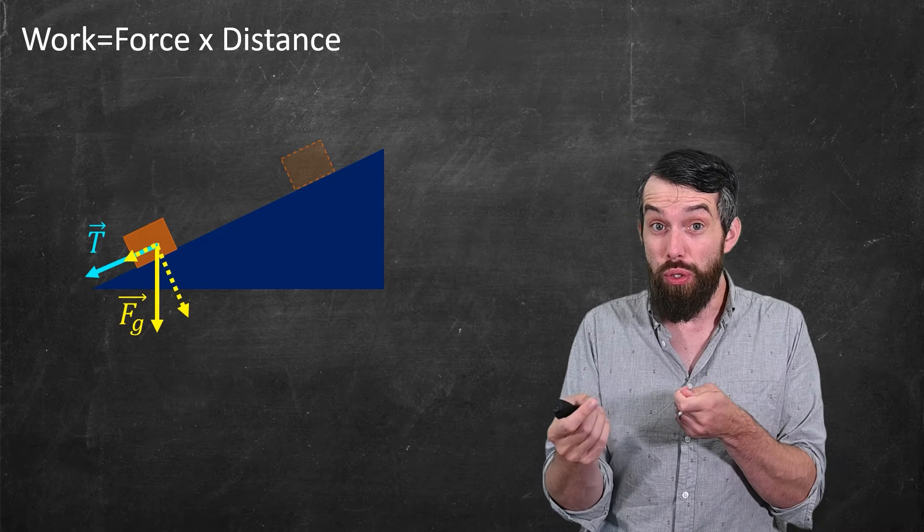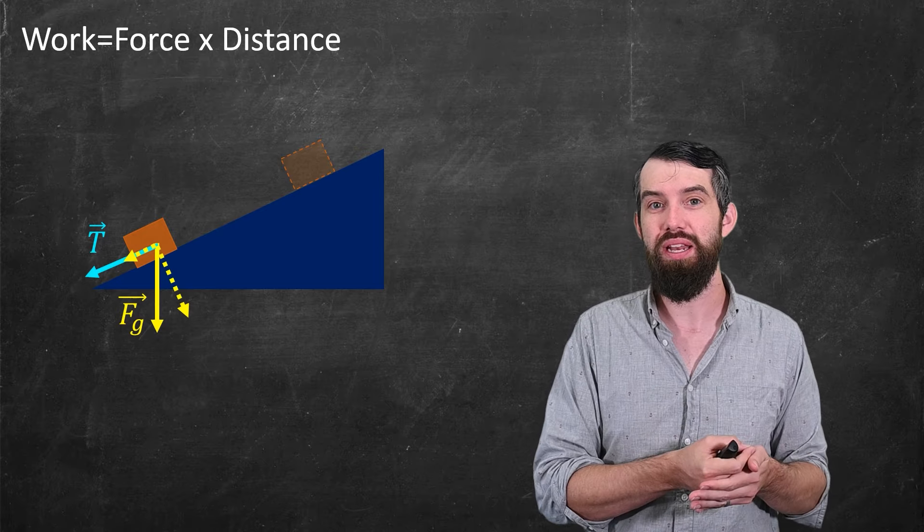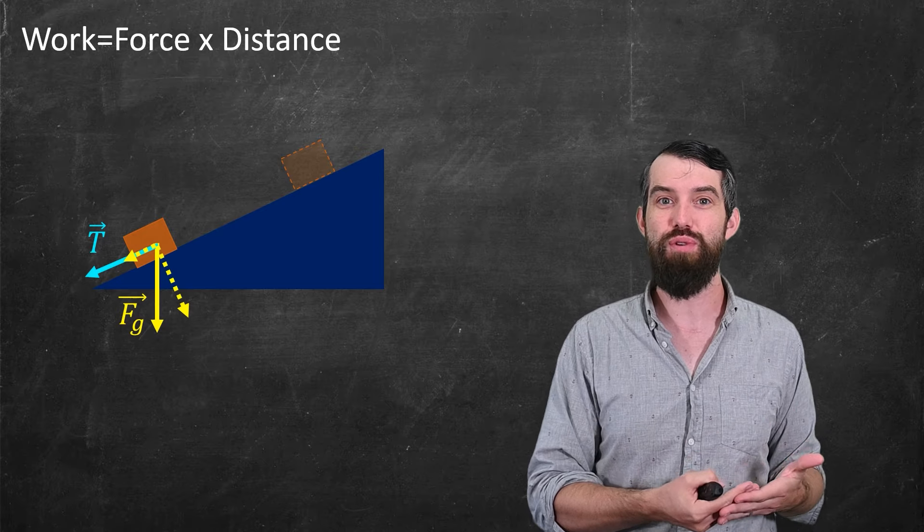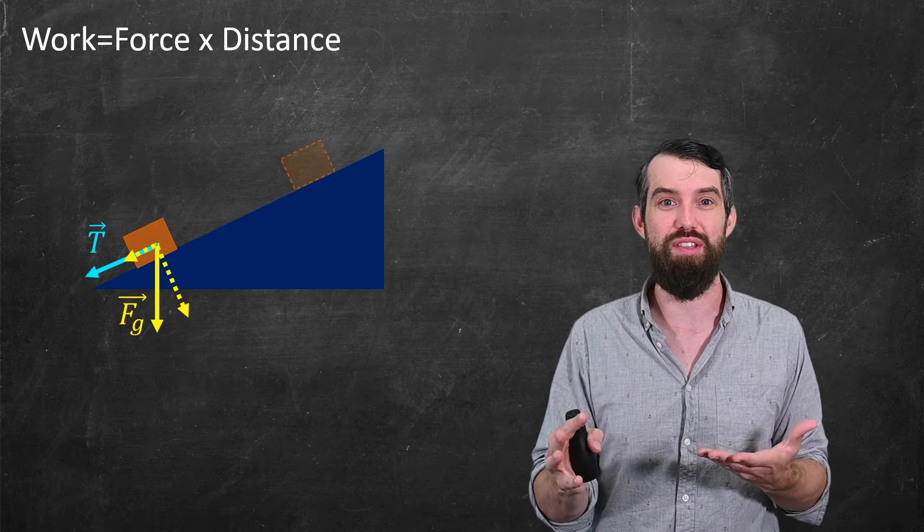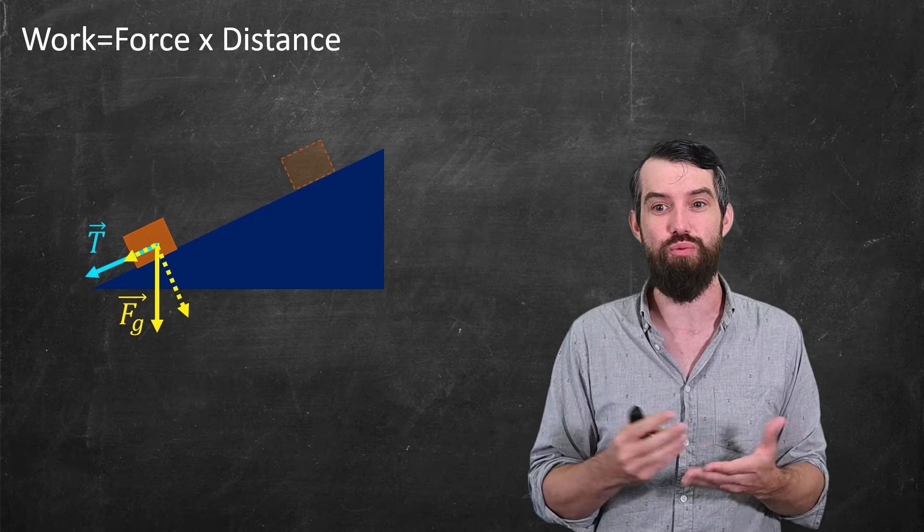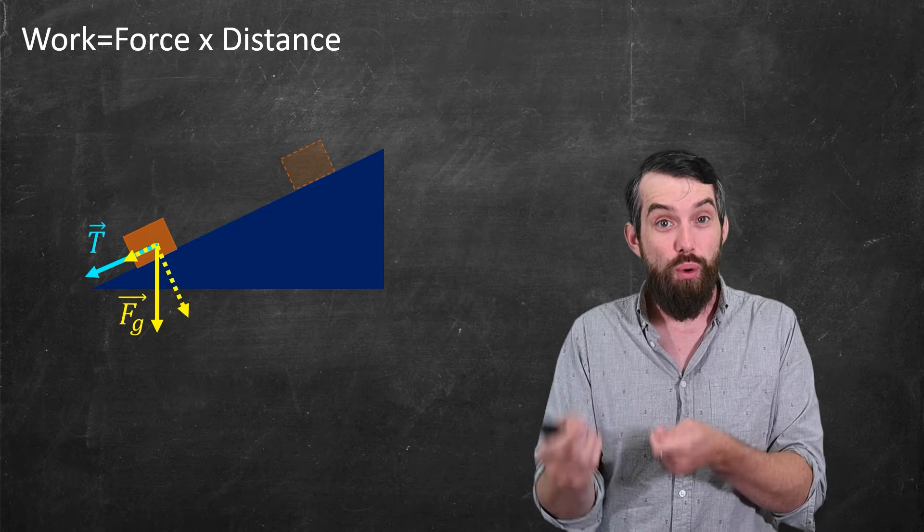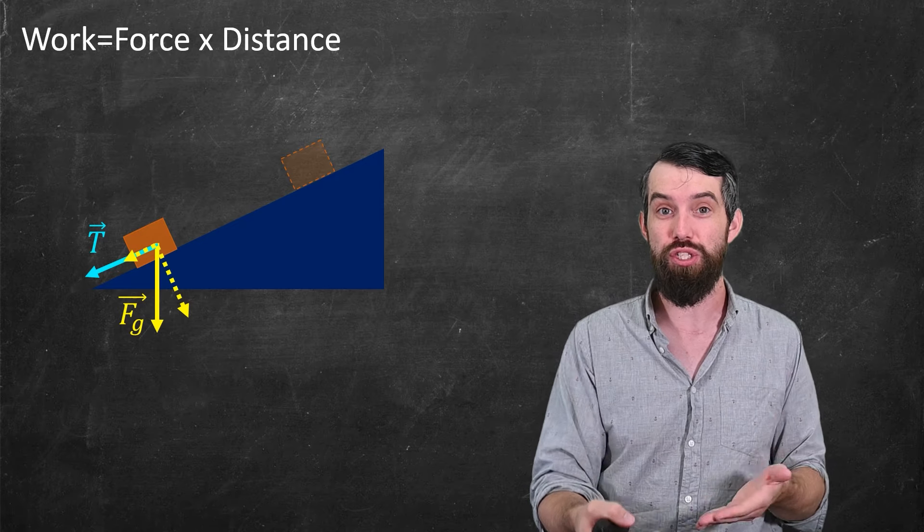So because the block moved along that incline plane, the proportion of the force of gravity that was normal is irrelevant. There's no work that's being done in that direction. All of the work that was done was the proportion that was moving in the tangential direction.